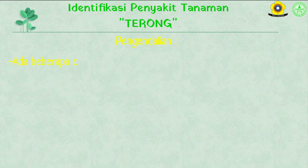Ada beberapa cara pengendalian hama dan penyakit. Pertama, menggunakan pestisida alami. Kedua, menanam varietas yang tahan terhadap penyakit busuk buah. Ketiga, mengambil dan memusnahkan buah yang sudah terinfeksi sehingga tidak menyebar ke tanaman yang sehat. Keempat, kalau serangan berat sebagai alternatif terakhir, bisa digunakan pestisida kimia seperti fungisida diantaranya antrakol, kocide, atau bionem.